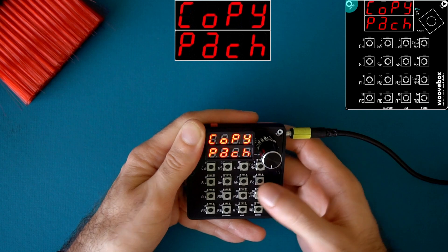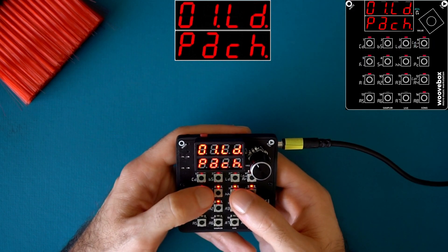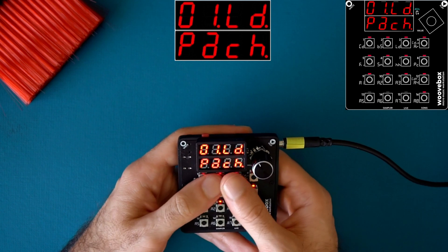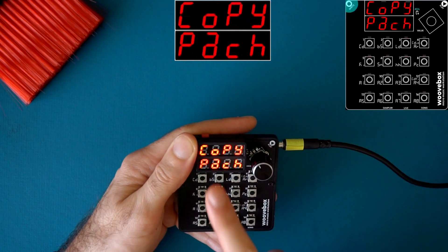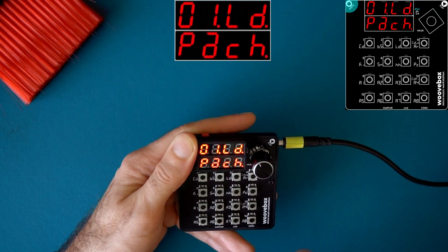Copy patch is very straightforward. So that is my base patch and I want to copy it somewhere else. Let's say on a separate track, I can hold right, click the encoder until I see copy patch, press and hold, wait until it says OK.